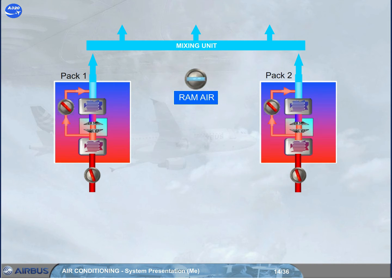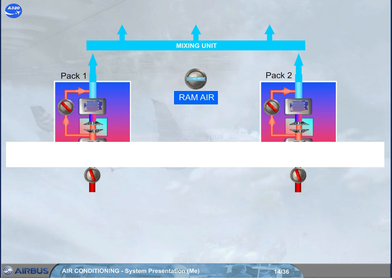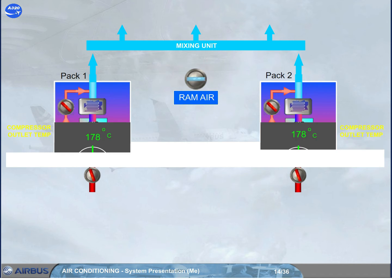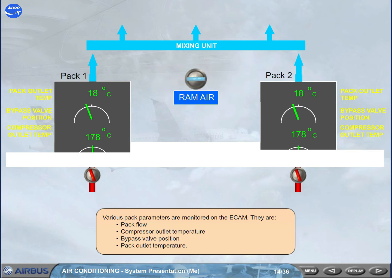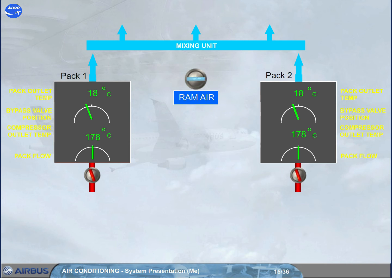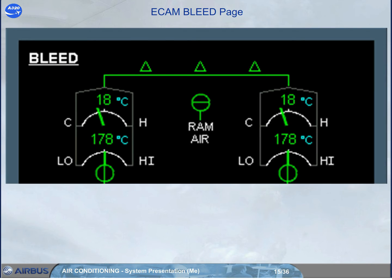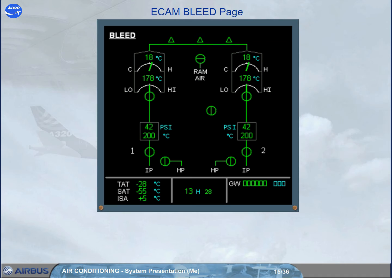Various pack parameters are monitored on the ECAM: pack flow, compressor outlet temperature, bypass valve position, and pack outlet temperature. These parameters, along with the valve positions, are displayed on the upper part of the ECAM bleed page.